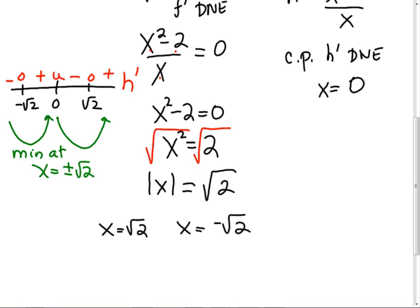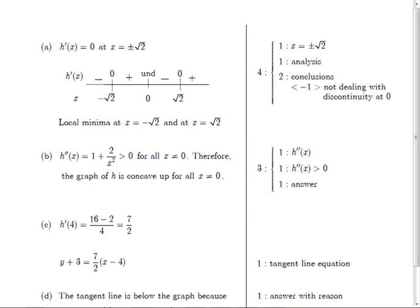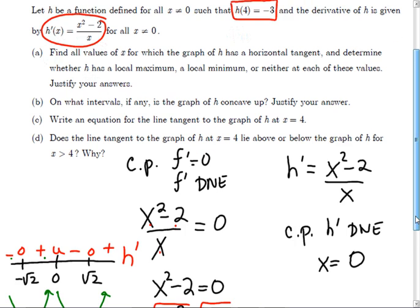At x equals plus or minus √2, that is not sufficient alone. The justification is that h′ changes from negative to positive. Keep it simple and succinct — don't write long drawn-out explanations. We have four points in that part. You did lose a point for not dealing with the discontinuity at x = 0. If you don't have zero there, it's almost impossible to get your four points.